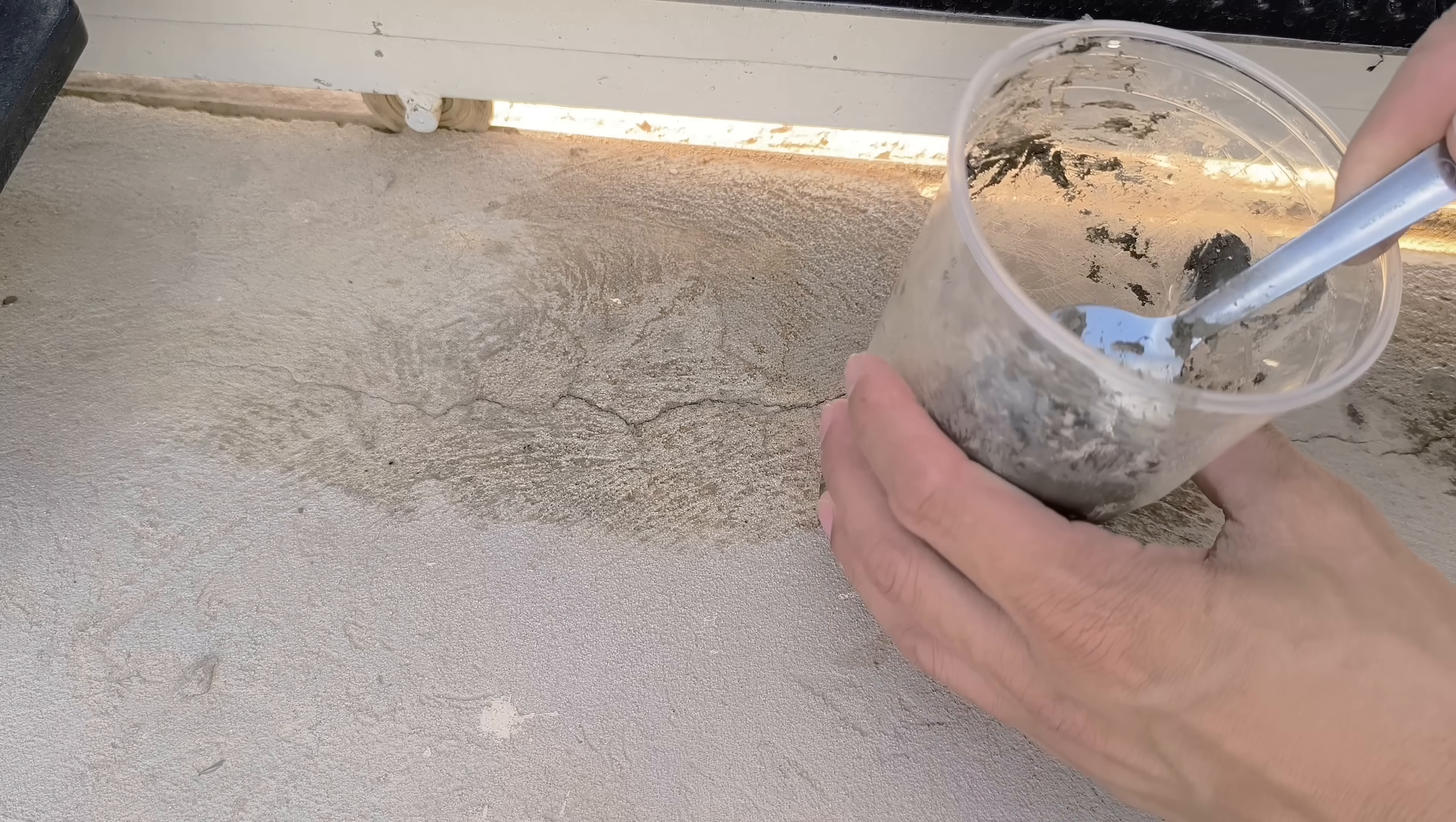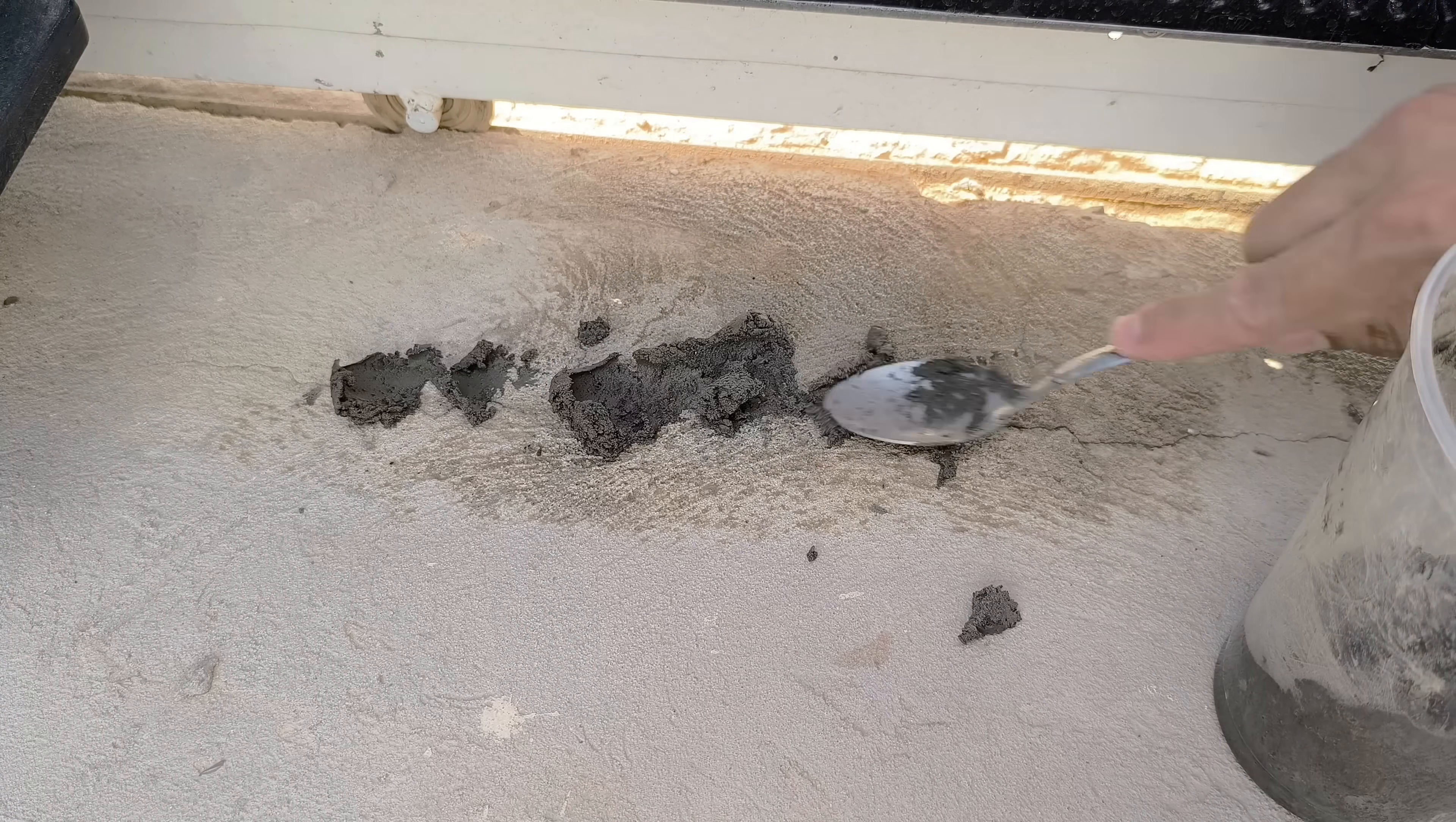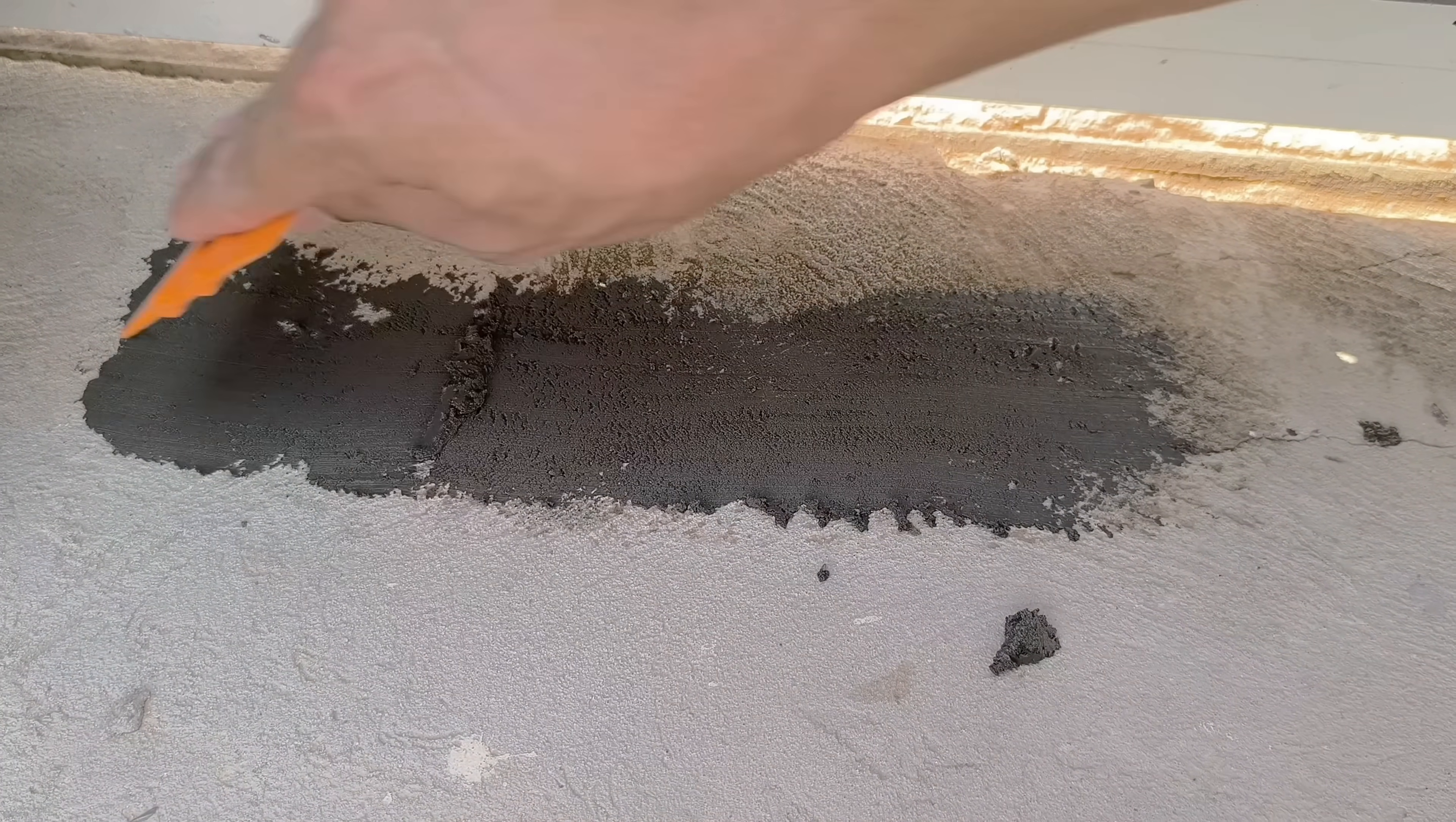Once everything is clean, grab a putty knife. If you have a flexible silicone one, even better, as it allows for a smoother, more professional finish. Apply the putty directly to the crack, pressing lightly so it penetrates the crevices. Then, smooth the surface to make it even.